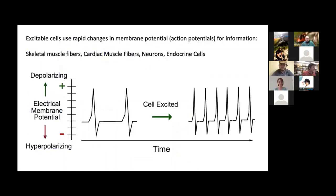The big picture is that excitable tissues — muscle fibers that move bones, muscle fibers of the heart, neurons of the brain, neurons of the peripheral nervous system, and endocrine cells — use rapid changes in the polarity of voltage across their membrane. Rapid changes in membrane potential in the form of action potentials send information to get other cells to do what they need to do. The information transfer is carried by these electrical signals.